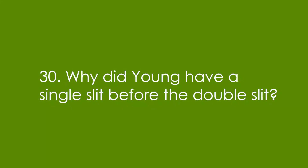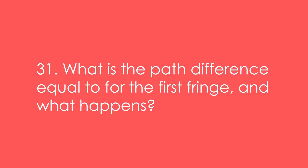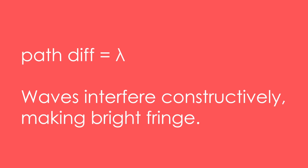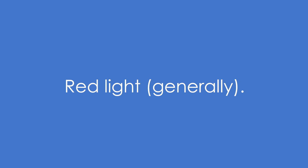30. Why did Young have a single slit before the double slit? It's to ensure that the light coming from the double slit was coherent. 31. What is the path difference equal to for the first fringe in a diffraction pattern and what happens there? The path difference is equal to one wavelength and the waves interfere constructively, making a bright fringe. 32. What diffracts more, blue or red light? Red light, generally.